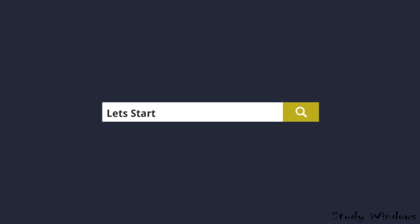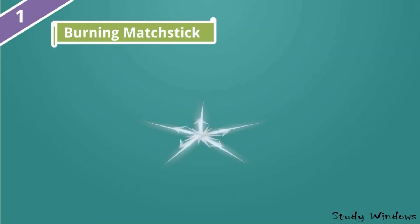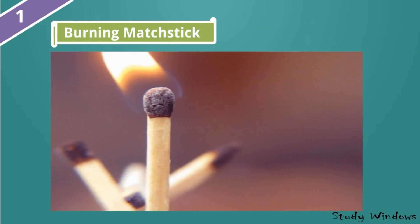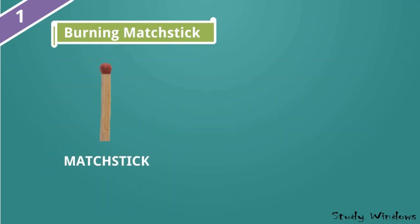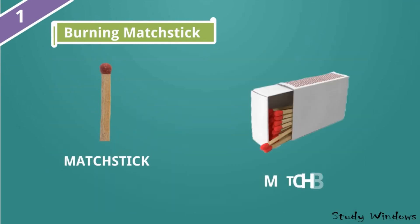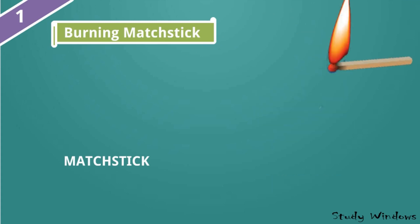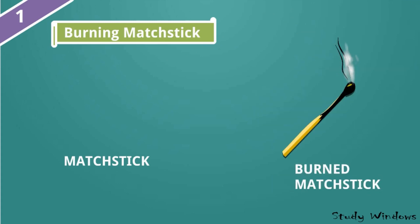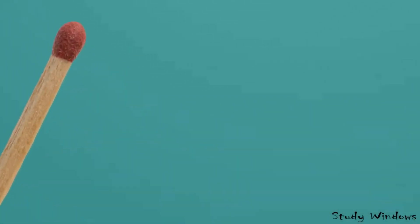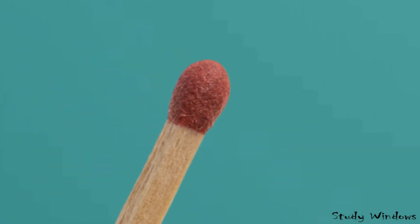Burning a match stick. This is the match stick and this is the match box. We know the match stick makes friction on the match box and we get a flame and it burns. This is the burnt match stick. How does the burning happen? Let's look closely. This is the sulfur, and this is powdered glass which makes the friction.